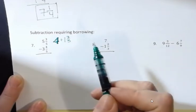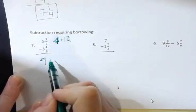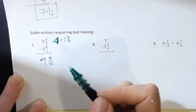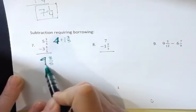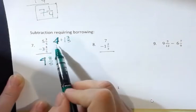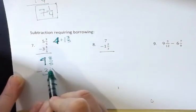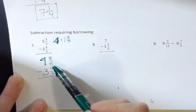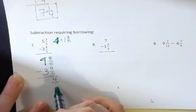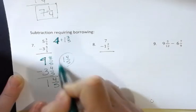1 times 5 is 5, plus 3 is 8. So what I have is 4 and 8 fifths — that's 1 times 5 plus 3 — instead of 5 and 3 fifths. Do you see how those are equal? Then I'm going to subtract 3 and 4 fifths. Now I have the greater fraction on top. 8 minus 4 is 4, keep the denominator the same, and 4 minus 3 is 1. So 1 and 4 fifths is my answer.